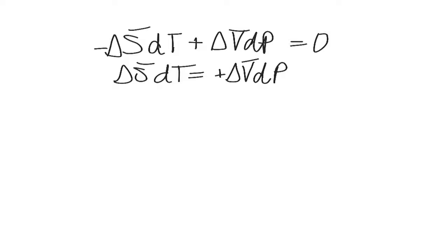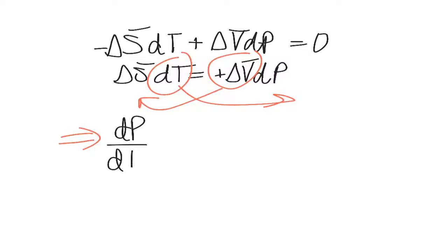Now if we divide through by dT and divide through by the change in molar volume, then we get dP/dT is equal to delta S molar over delta V molar.